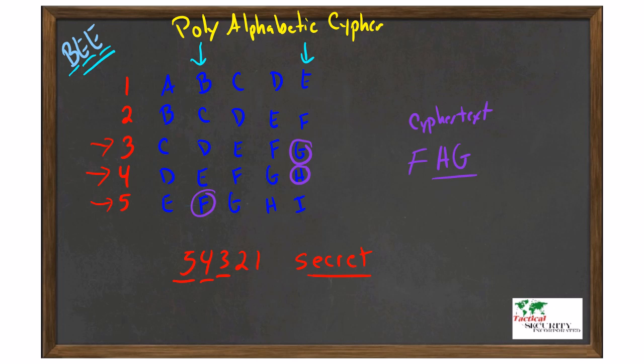When dealing with crypto, patterns in the plaintext producing patterns in the ciphertext is considered a weakness.